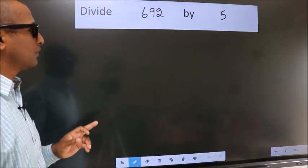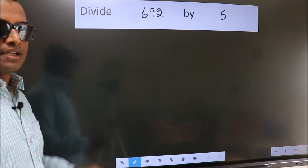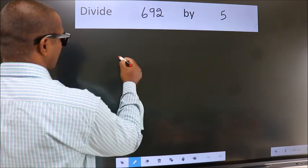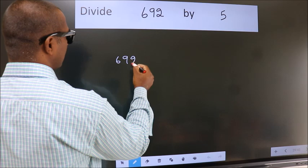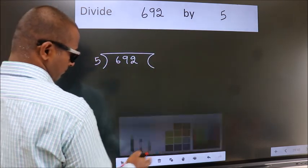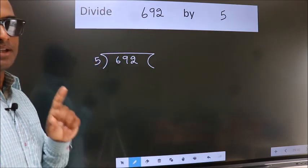Divide 692 by 5. To do this division, we should frame it in this way: 692 here, 5 here. This is your step 1.